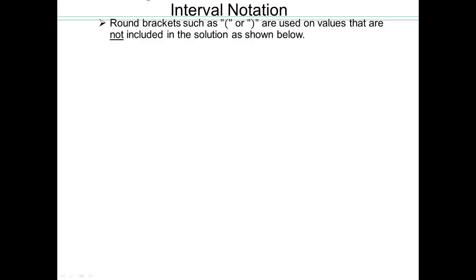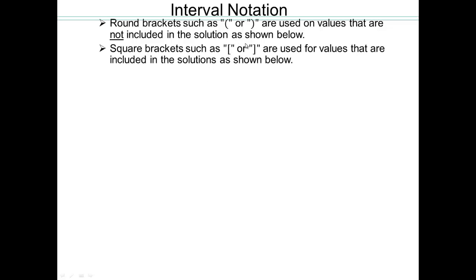Let's get some convention out of the way. A round bracket on the left or right means that whichever entry comes right after the left bracket is not part of your solution, and whichever entry comes right before the right bracket is also not included. So we use round brackets when the values are not included. Square brackets are used when the values are included — anything that follows the left square bracket is included, and anything that precedes the right square bracket is included.